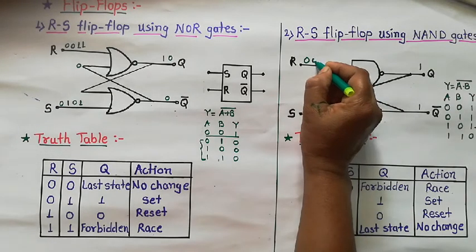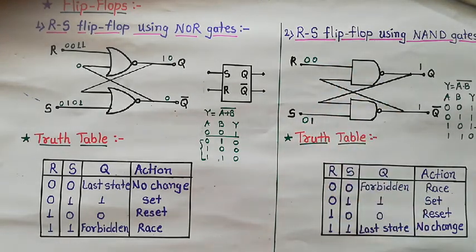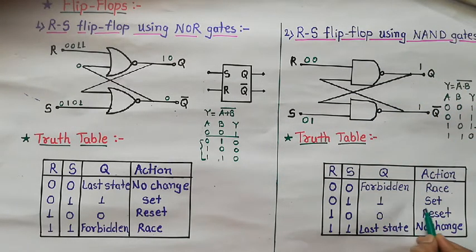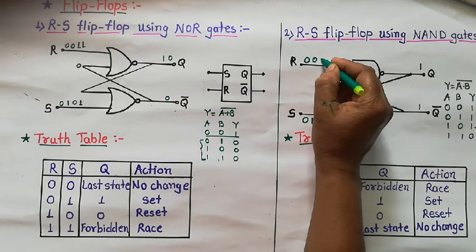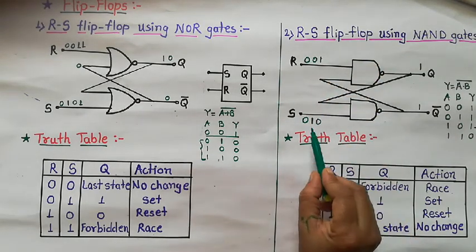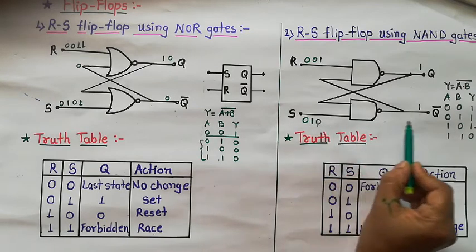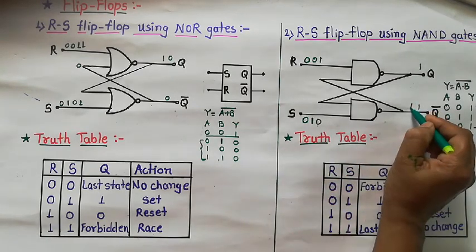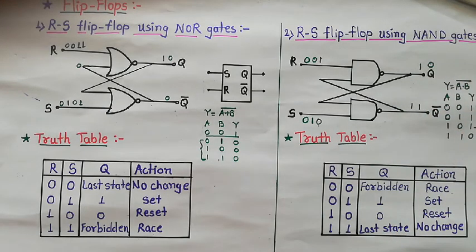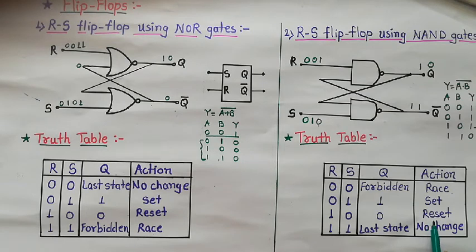Second condition: if R=0 and S=1, then one input to the upper NAND gate is 0. Therefore its output is 1, that is Q equals 1. When Q equals 1, the flip-flop is set. When R=1, Q equals 0. Then one input to the lower NAND gate is 0, so the output of the lower NAND gate is high — that is Q bar equals 1. Since Q bar equals 1, and Q and Q bar are always complementary, Q equals 0. The flip-flop is in the reset condition.